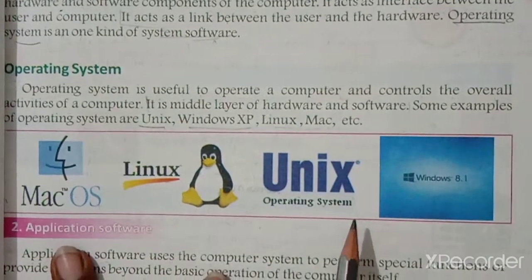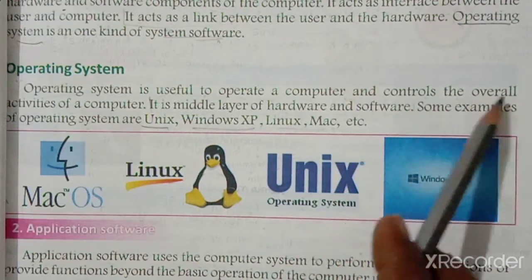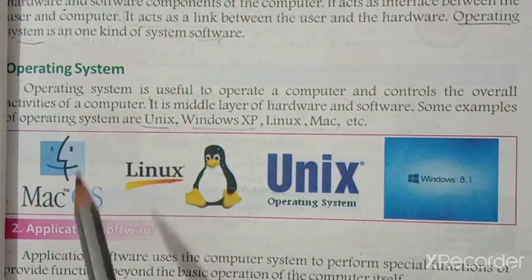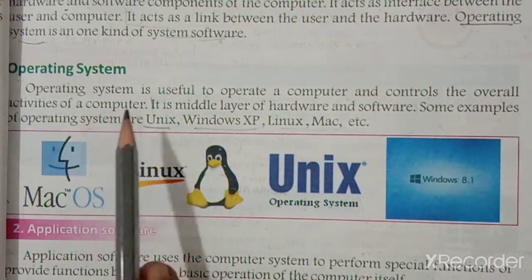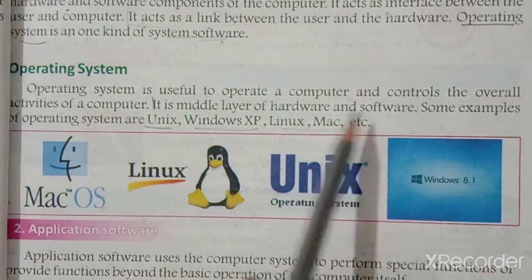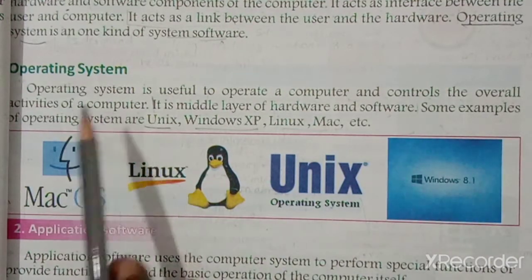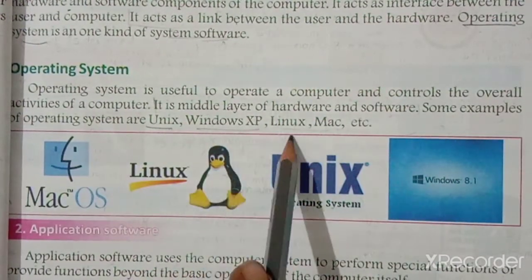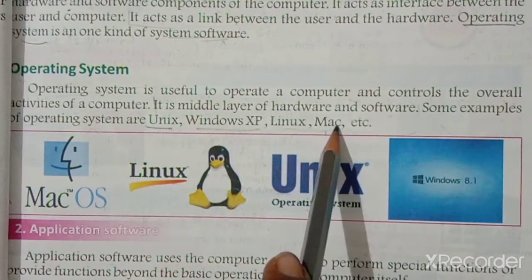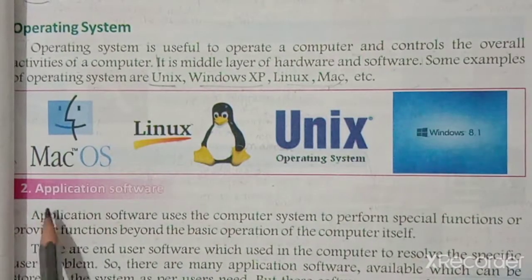The operating system is useful to operate the computer and controls the overall activities of the computer. It is the middle layer between hardware and software. Examples of operating systems include Mac OS, Linux, Unix, and Windows 8.1.